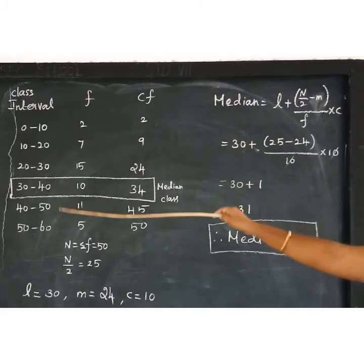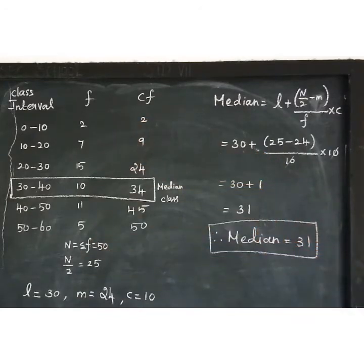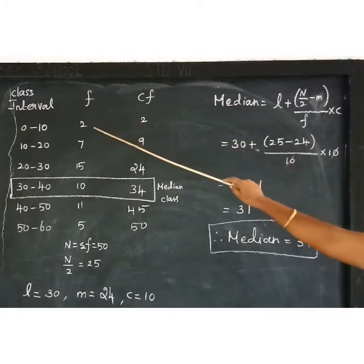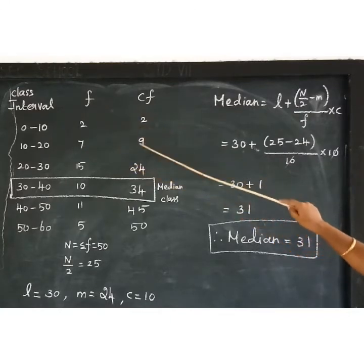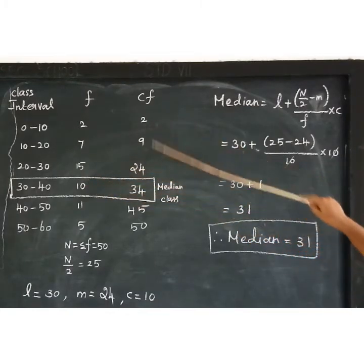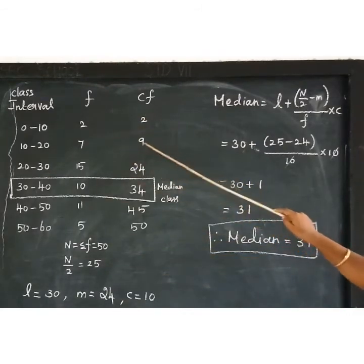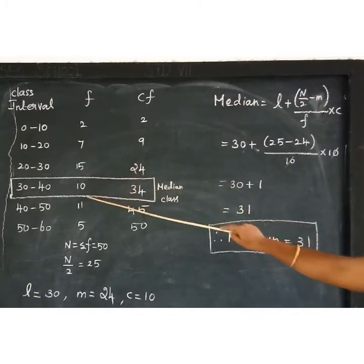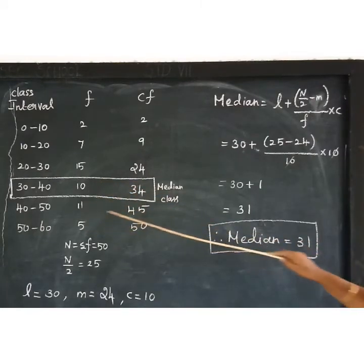The first column is class interval, the second is frequency (number of students), and the third is cumulative frequency. Write 2 in the first place, then add the values: 7 plus 2 is 9, 9 plus 15 is 24, 24 plus 10 is 34, 34 plus 11 is 45, 45 plus 5 is 50.